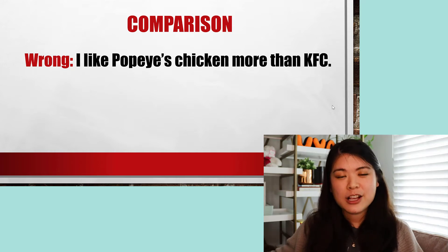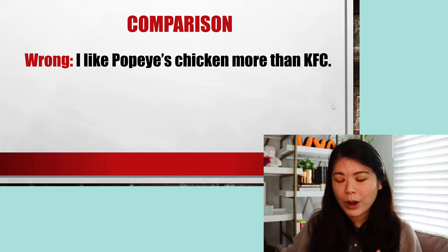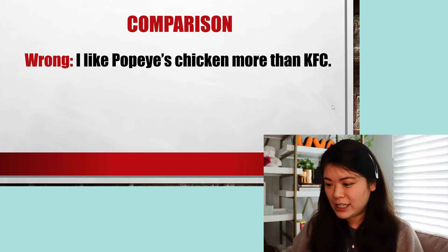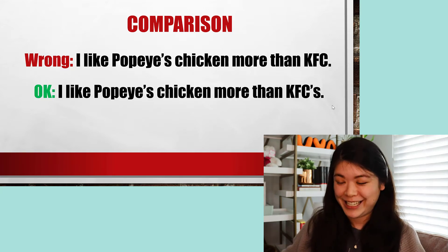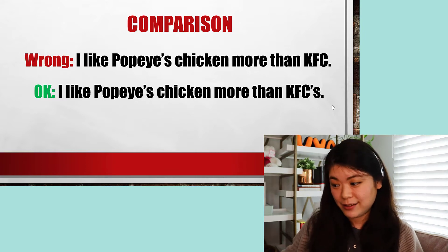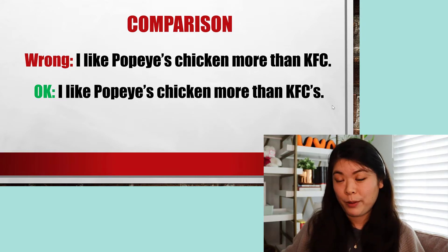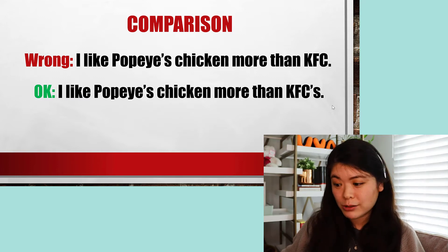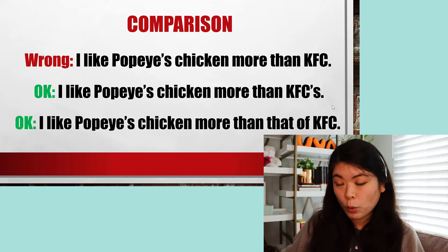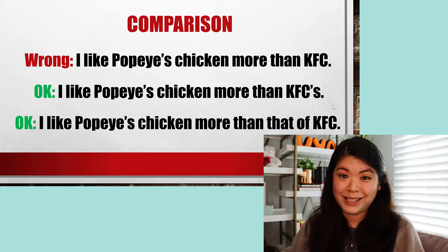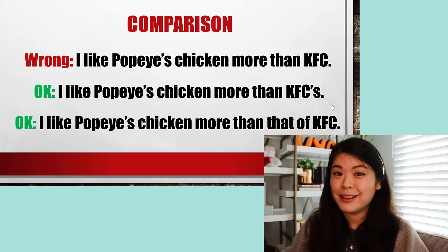So that's incorrect. How can we correct it? Well, one way we can do that is by writing: I like Popeye's chicken more than KFC's — apostrophe s. That's a possessive that tells us we're comparing Popeye's chicken to KFC's chicken. I can also say: I like Popeye's chicken more than that of KFC. The word 'that' here references chicken. So that would be okay.